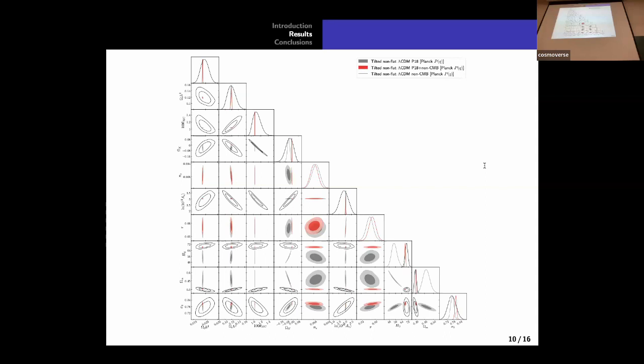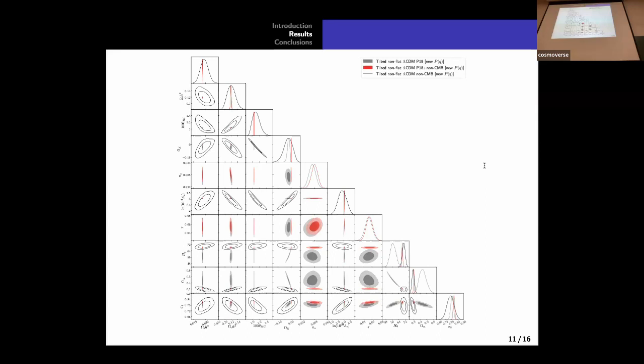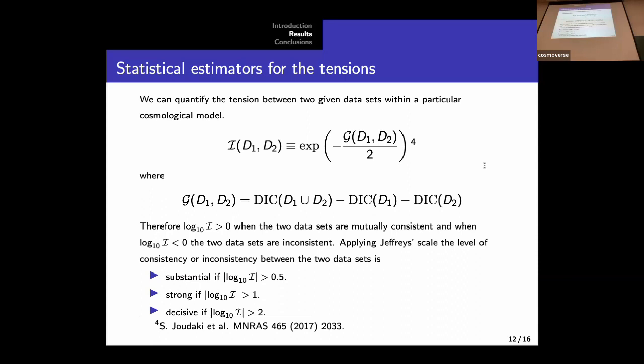There is some tension between high-redshift data and low-redshift data. First of all, let us see this in a more visual way. For the Planck power spectrum model, we observe that in some of the panels, the contour plots are not overlapping even at two sigma. So this is just a reflection of the tension that we have just mentioned. And if we look at the contour plots for the new power spectrum, we realize that we get overlap at two sigma. So even if the tension is still there for the new power spectrum model, they are less severe if we compare with the Planck power spectrum.